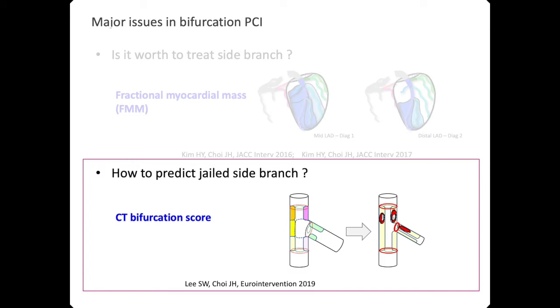In this first presentation, I'd like to introduce the CT-BIPCAN Score, which was developed to predict loss or jailing of the side branch before PCI from coronary CT imaging.